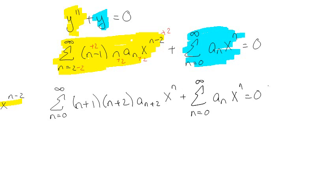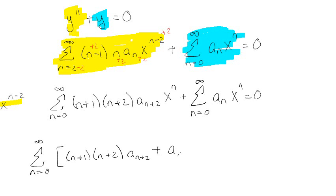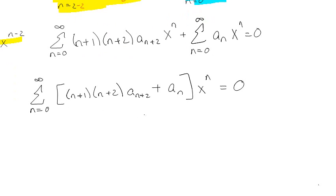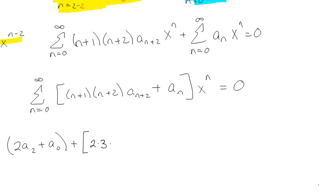What's awesome about this is that everything is now in terms of the coefficient of x to the n, so I can combine these and get the sum from n equals 0 to infinity of the quantity n plus 1 times n plus 2 times a sub n plus 2, plus a sub n, times x to the n equals 0. If I write this out, plugging in n equals 0, I get 2 times a2 plus a naught; plugging in n equals 1, I get 2 times 3 times a3 plus a1 times x to the first, and so on, all equal to 0.